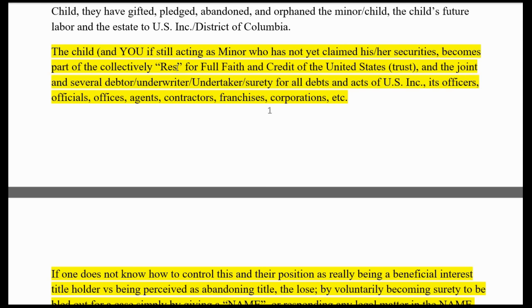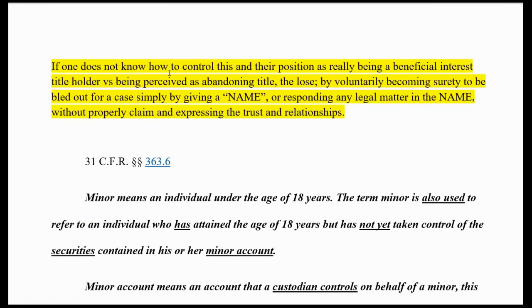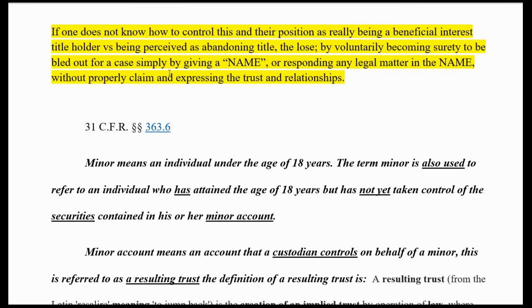Even the acts of the United States, its officers, officials, offices, agents, contractors, franchises, and corporations fall on you. If you don't know how to control this, your position as a beneficial interest title holder is being perceived as an abandonment — somebody who abandoned a title — and you lose. By voluntarily becoming surety for a case, simply by giving the name or responding to any legal matter in that all-capital-letter name without properly claiming and expressing the trust and relationship, you get hooked.